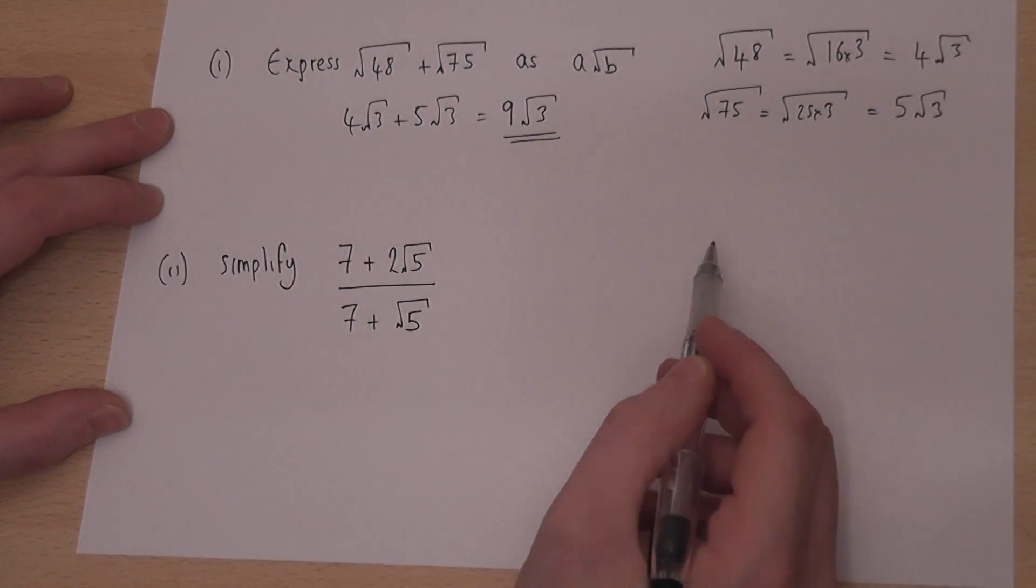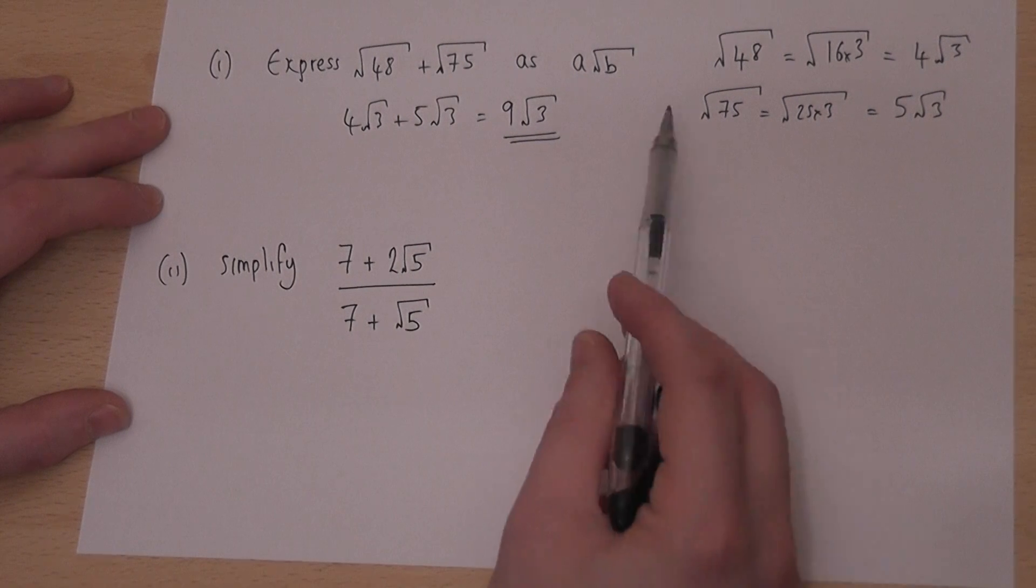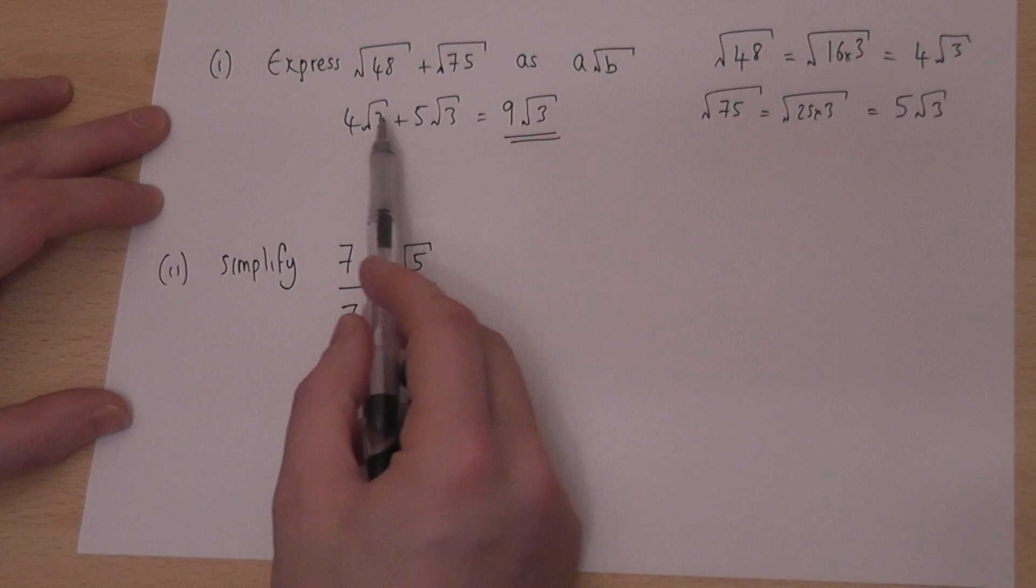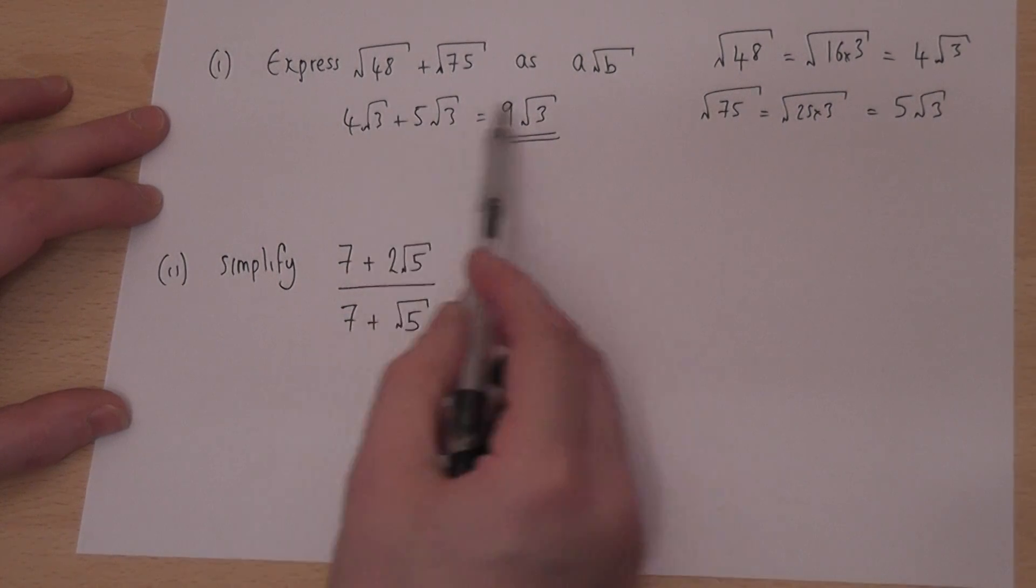So when we add surds, we must where possible make them simpler so we can get the same number in the square root to therefore add them where possible.